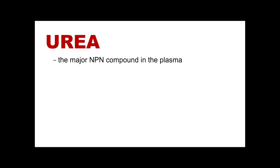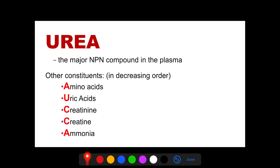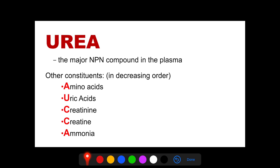The major NPN found in the plasma is urea. Other NPNs in decreasing order are: amino acids, uric acid, creatinine, creatine, and ammonia. Ammonia is very toxic, so only a very small amount is found in the blood. A mnemonic to remember these: 'All underarms create cheesy aroma.'